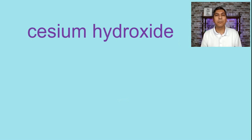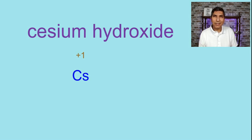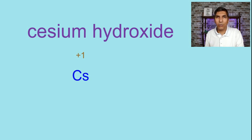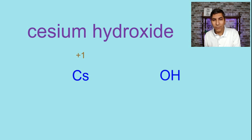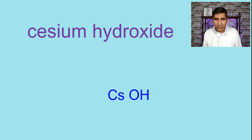Let's try cesium hydroxide. Cesium is Cs, and its charge is positive 1. Hydroxide is not an element — it's a polyatomic ion, so we have to refer to the ion chart. Hydroxide has a formula of OH and its charge is negative 1. The charges cancel out: positive 1 and negative 1. So we just put the two ions together: CsOH — cesium hydroxide.